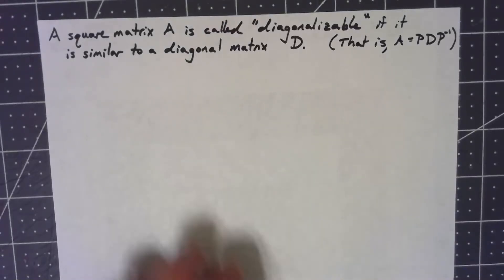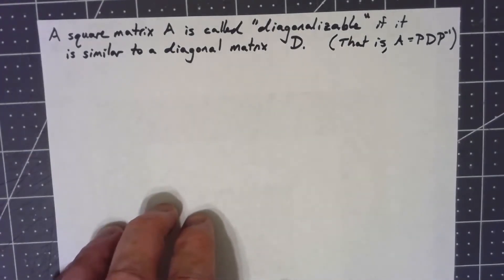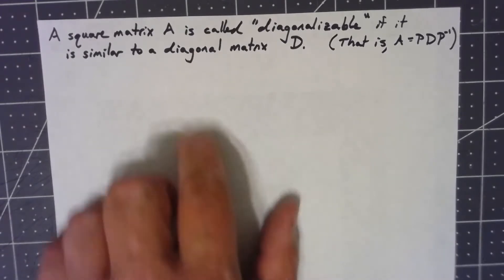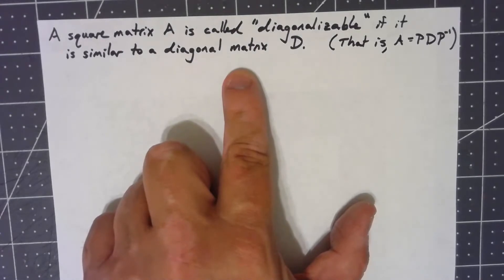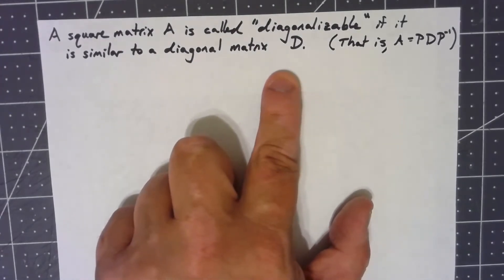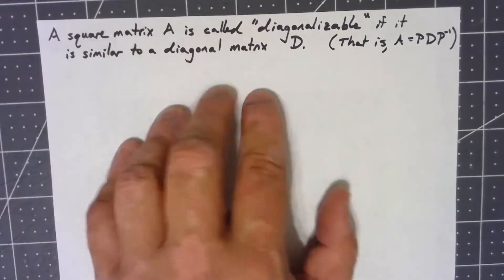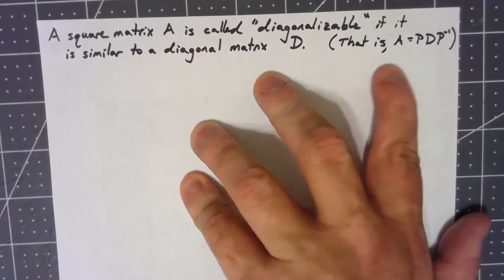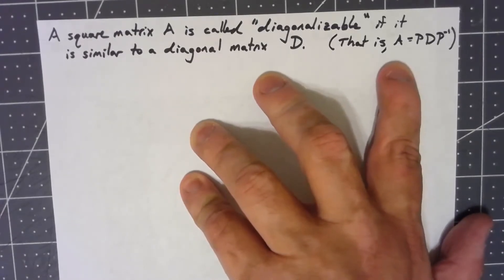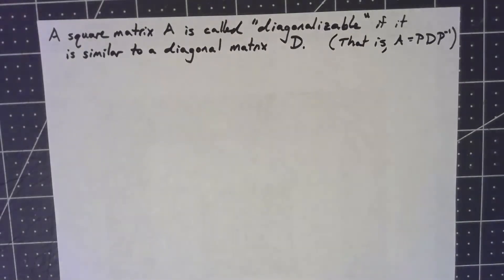Let's start with a definition. We'll say that a square matrix A is diagonalizable if it's similar to a diagonal matrix D. Diagonal matrices have entries on the main diagonal but nowhere else — everywhere else in the matrix the entries are zero. The definition of similar means that A equals P D P inverse for some matrix P.